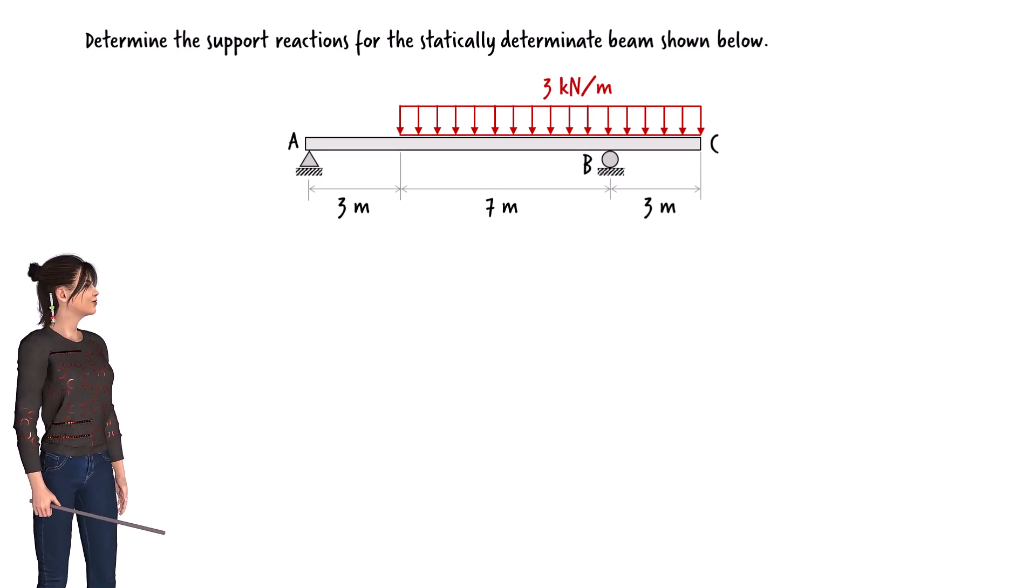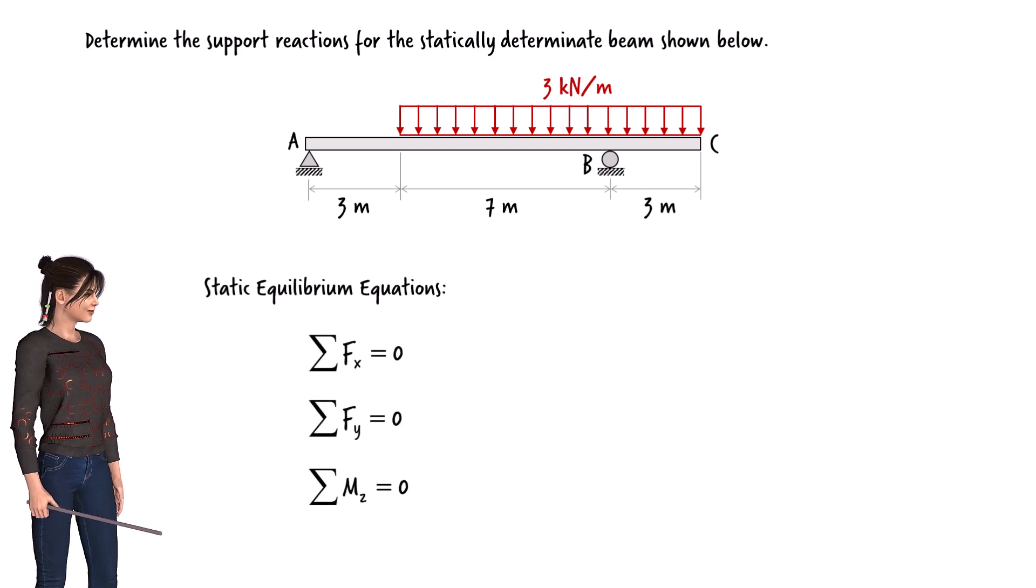We wish to calculate the support reactions for a simply supported beam with an overhang. The beam is subject to a uniformly distributed load. Since the beam is statically determinate, we can analyze it using the static equilibrium equations.